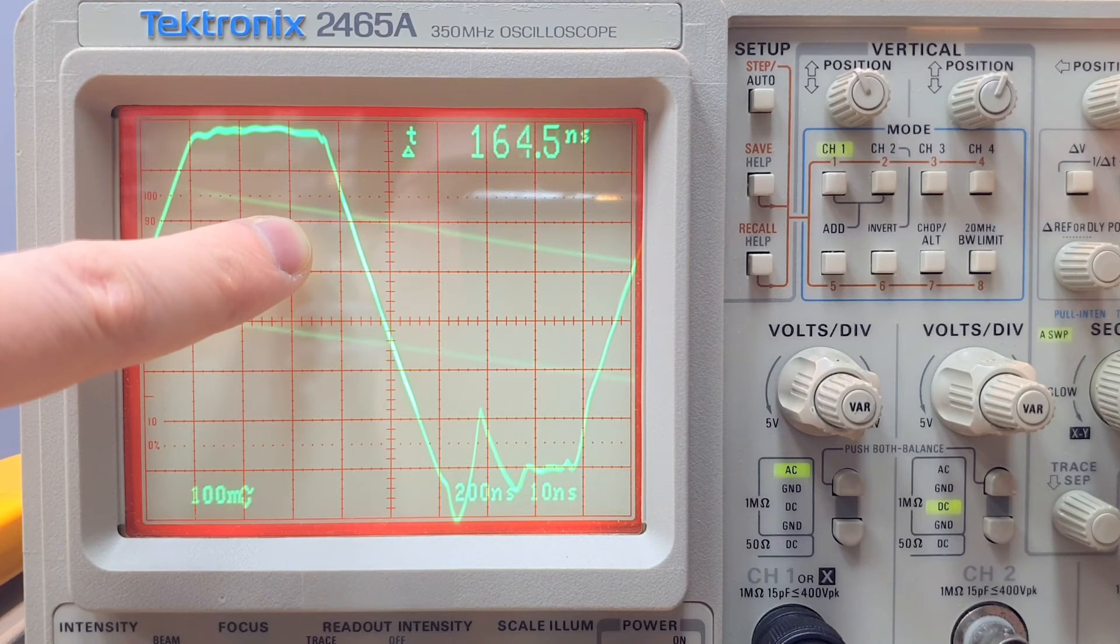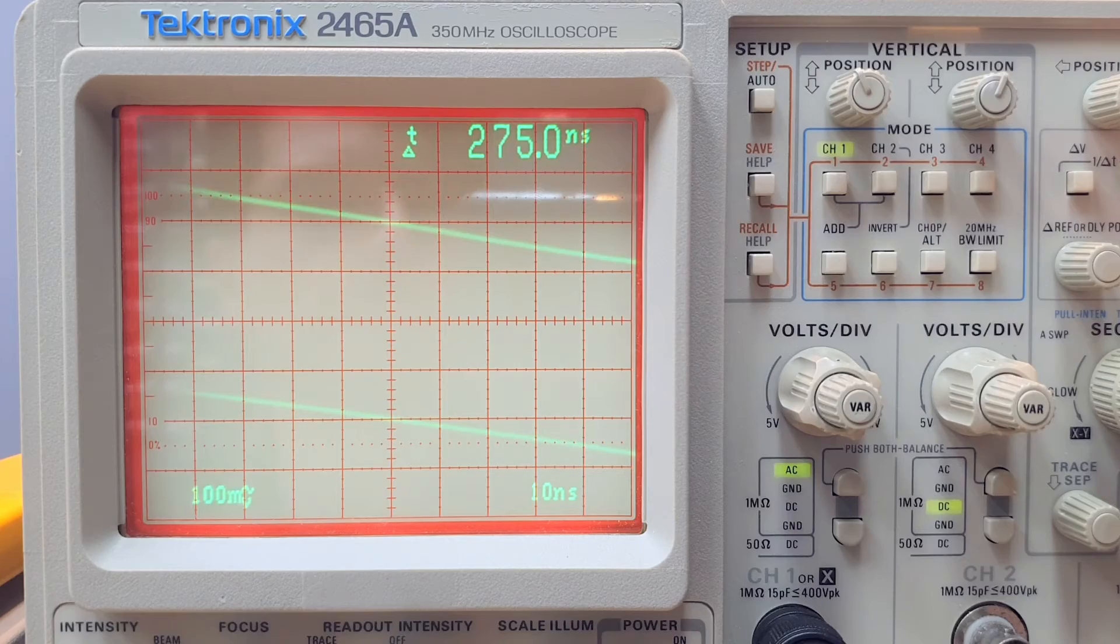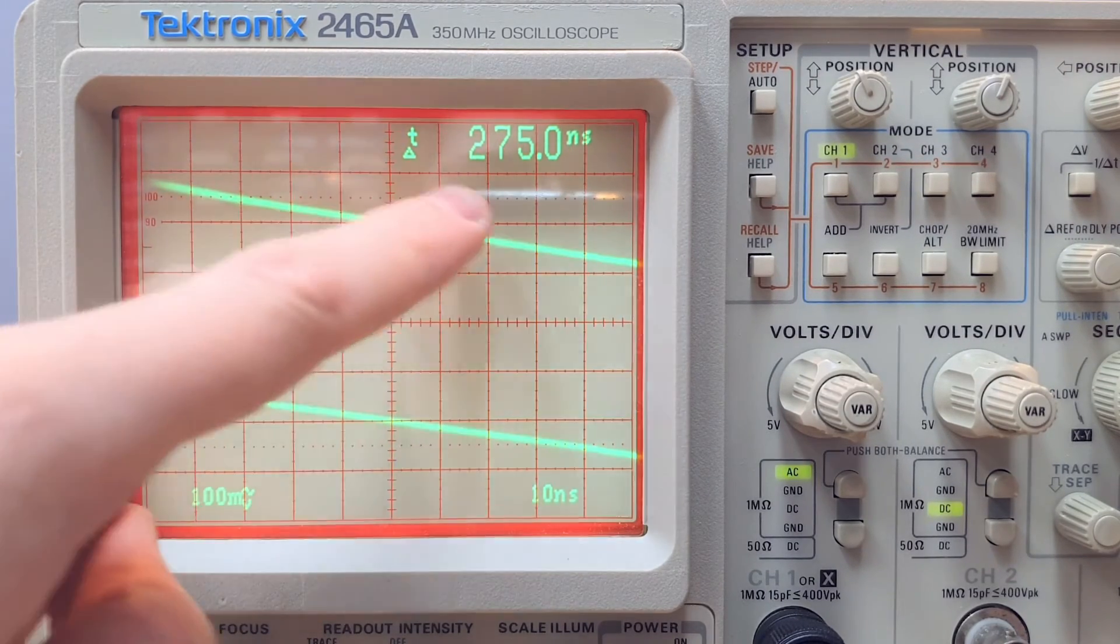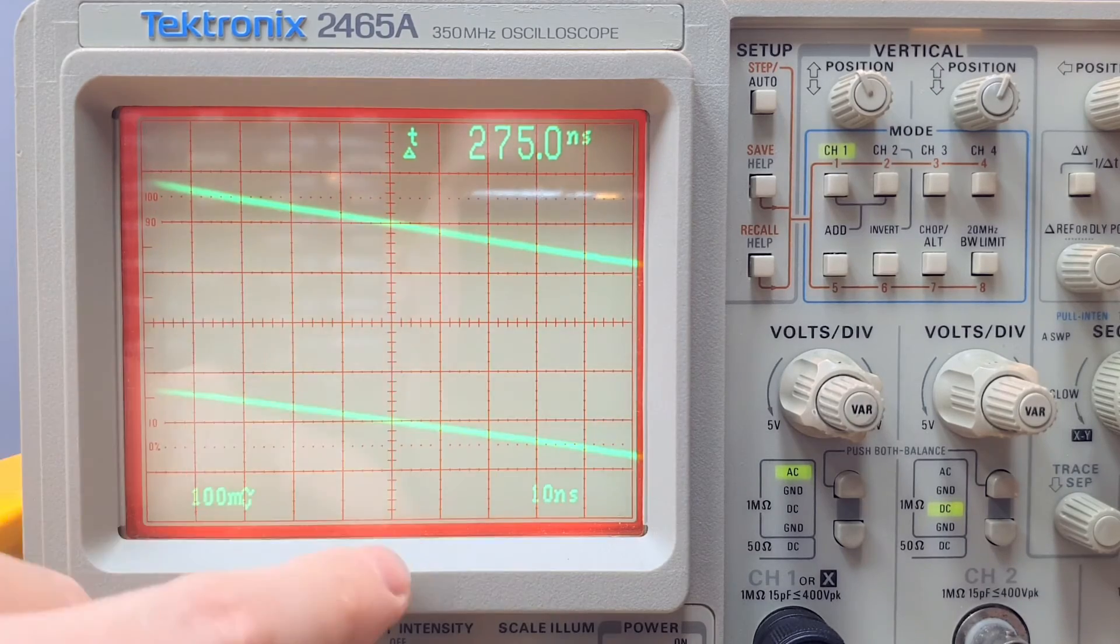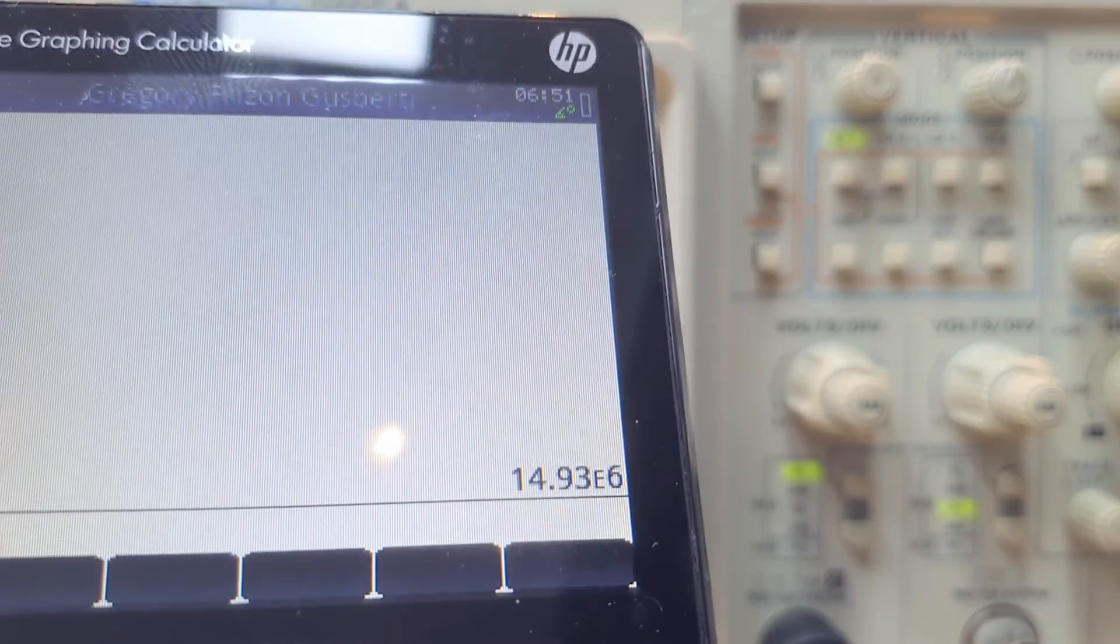Now it becomes very easy to measure. Let's place it here. Four volts. And now we have a much more precise measurement here. Look how this measurement actually increased here. Let's calculate again.